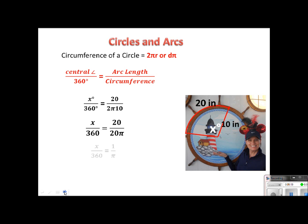And, of course, I can cross cancel those 20s, and that leaves me with 1 over π. Now I'm ready to cross multiply.